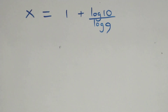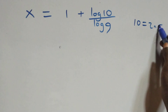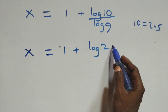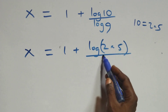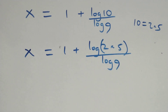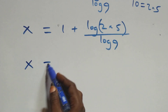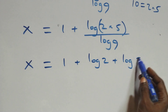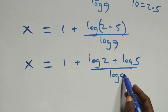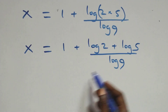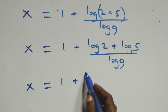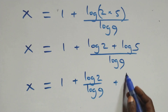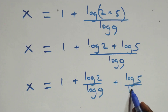Next, we can express 10 as 2 times 5. So we have x equals to 1 plus log of 2 times 5, over log 9. This also follows the logarithm product rule, giving us x equals to 1 plus log 2 plus log 5, over log 9. Then we separate this into two fractions: x equals to 1 plus log 2 over log 9, plus log 5 over log 9.